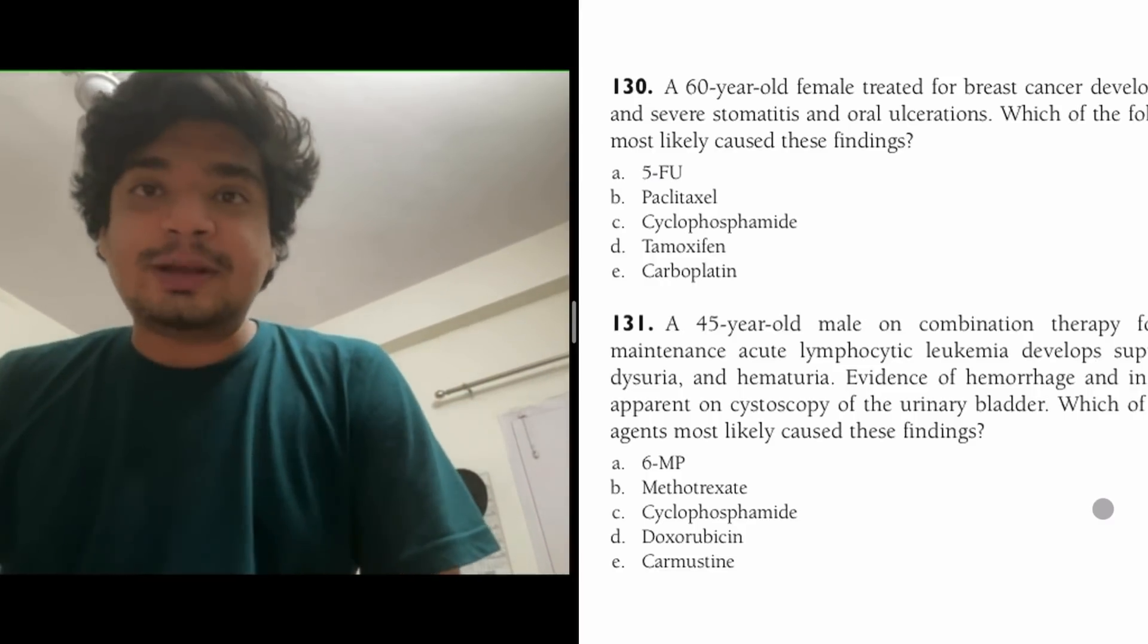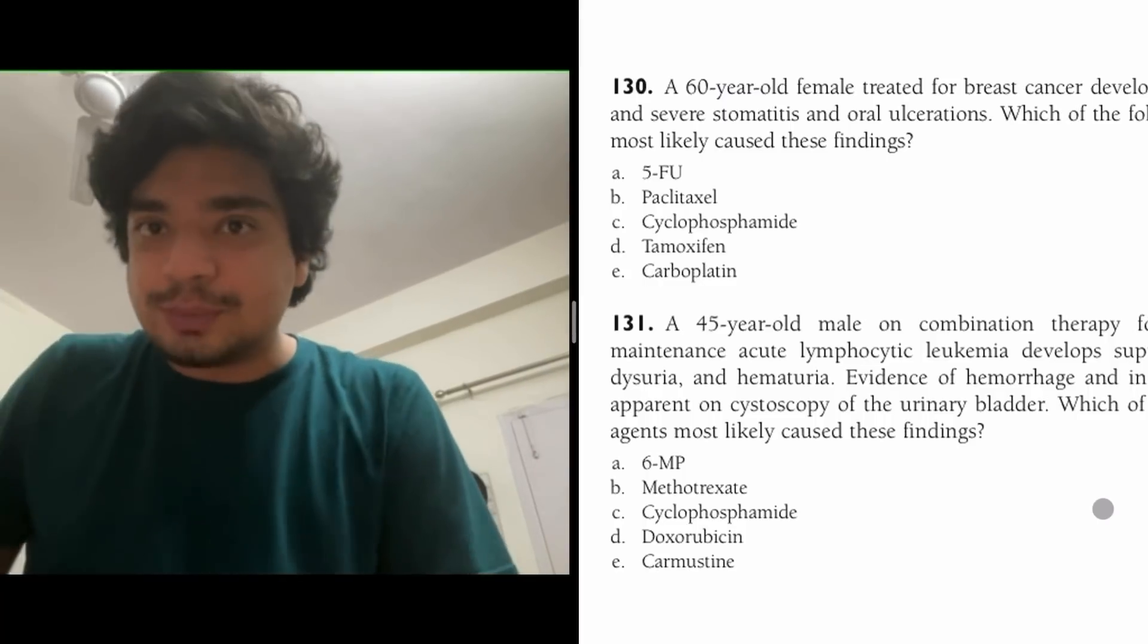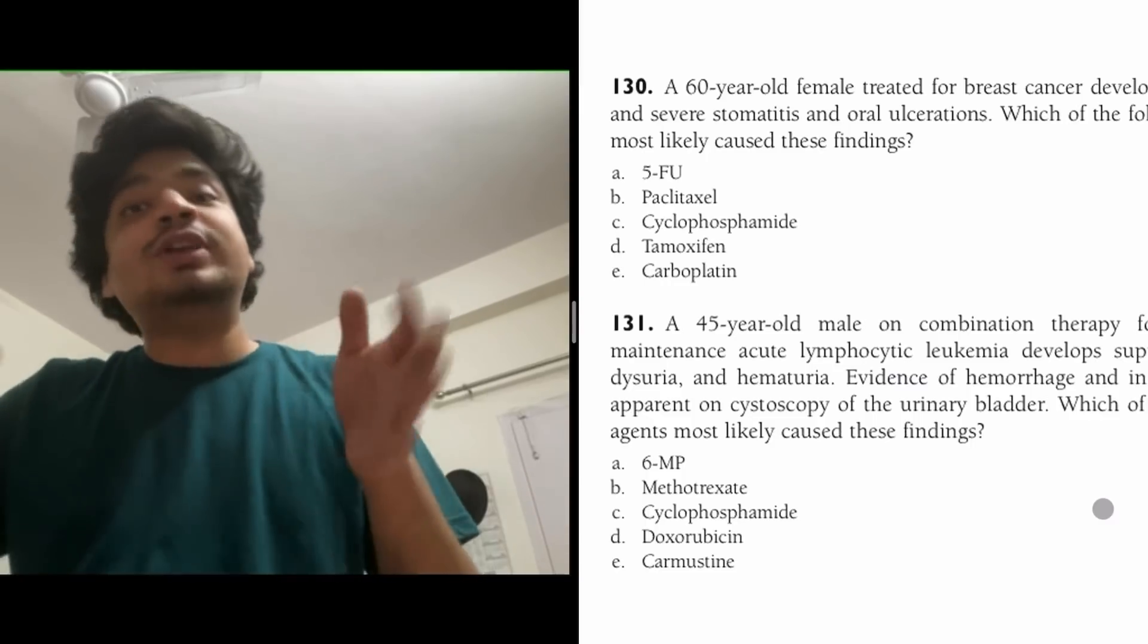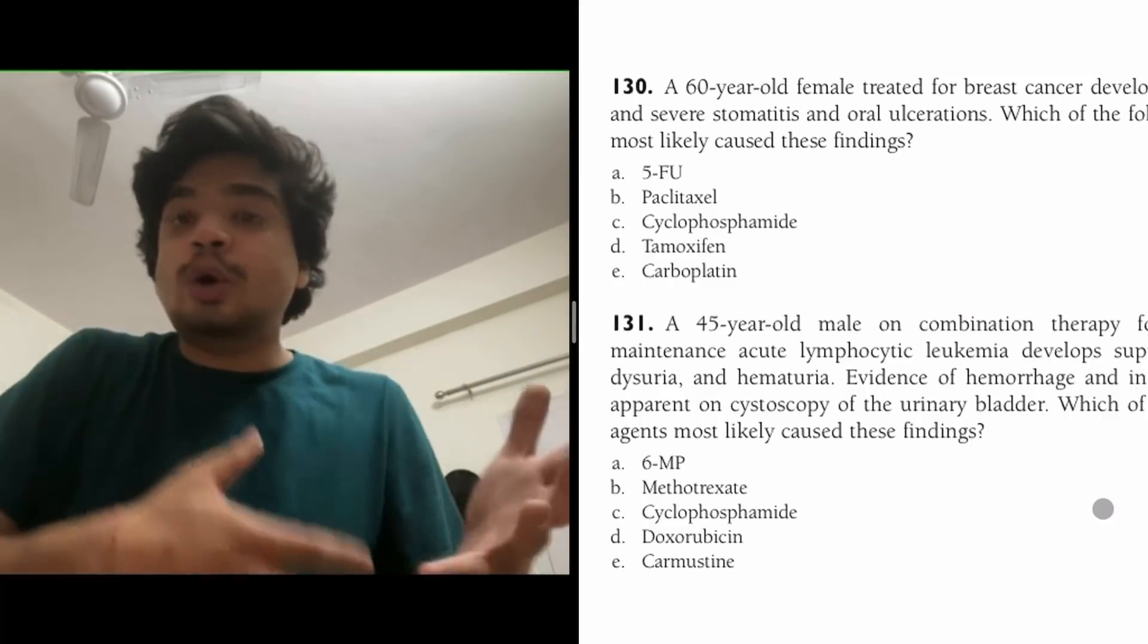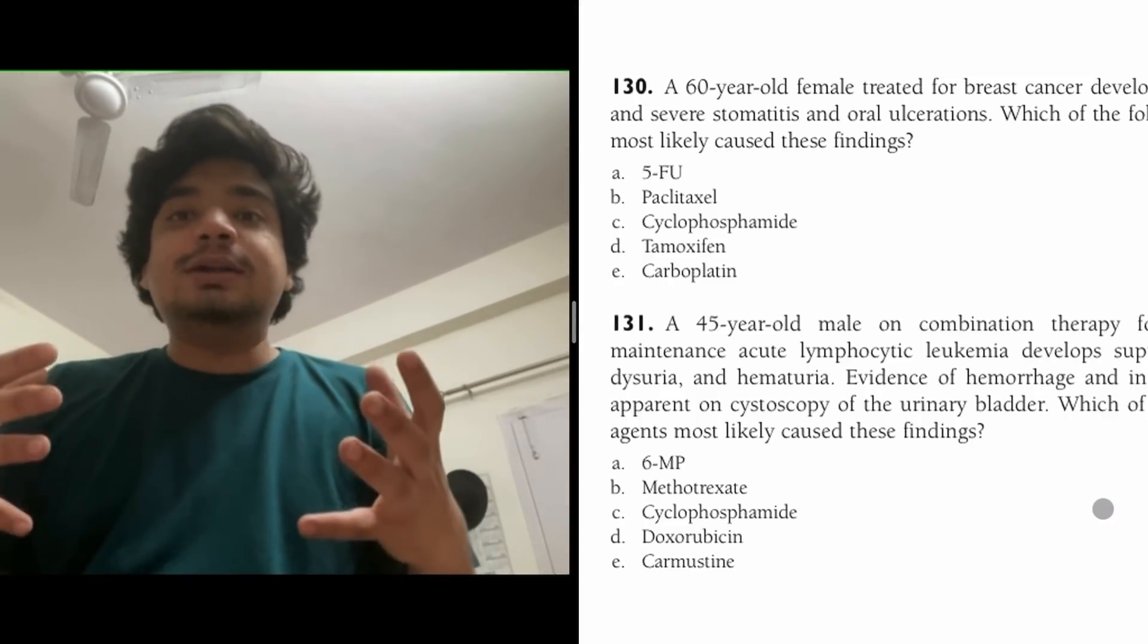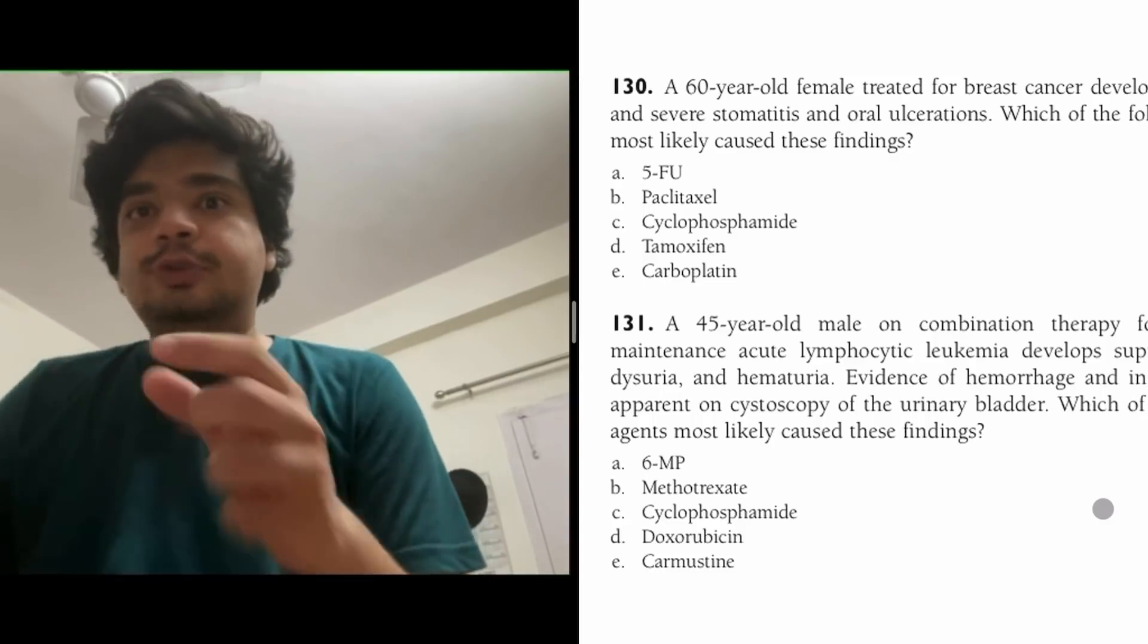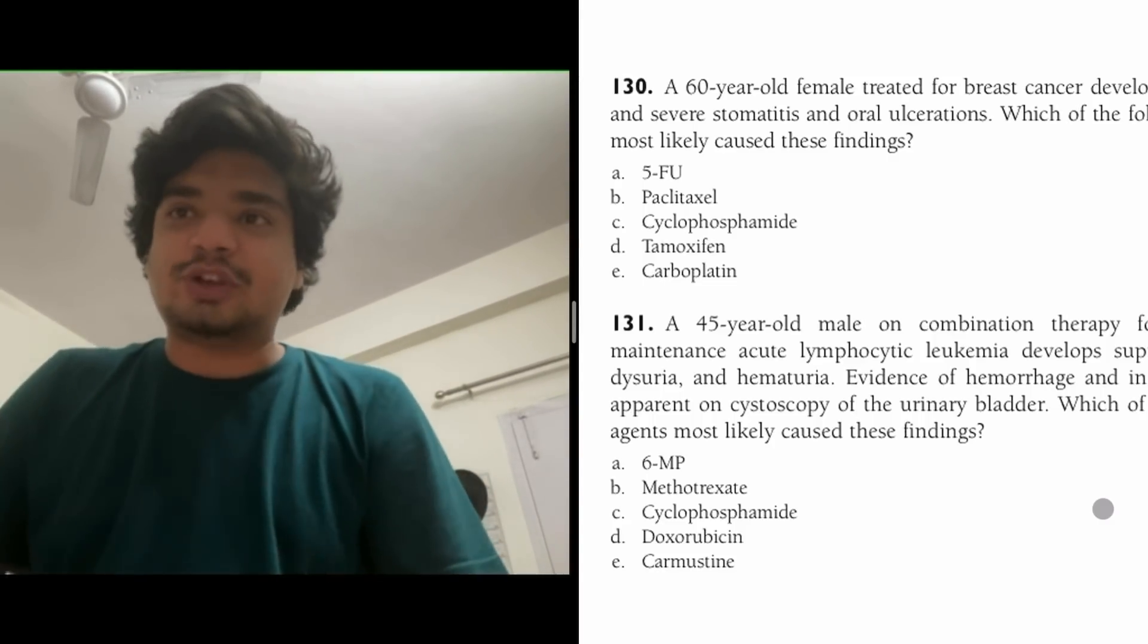That's how they actually present when they have hemorrhagic cystitis. Whenever we give a child cyclophosphamide or ifosfamide, we do a routine urine examination to look for microscopic hematuria that may be a harbinger of actual hemorrhagic cystitis. That's how they present. You won't know this because you're in MBBS right now, not practicing, but you'll learn through these questions and clinical scenarios.